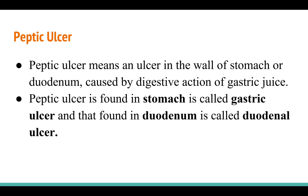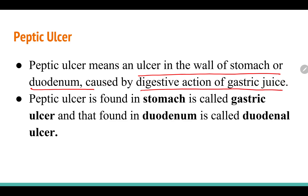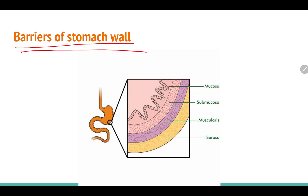Peptic ulcer is an ulcer in the wall of the stomach or duodenum caused by the digestive action of gastric juice. If the ulcer is found in the stomach it is called a gastric ulcer; if found in the duodenum it is called a duodenal ulcer. The four layers of the stomach wall are: mucosa (innermost), submucosa, muscularis, and serosa (outermost).